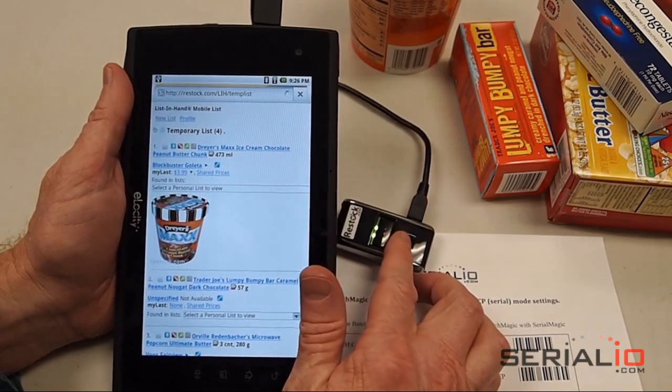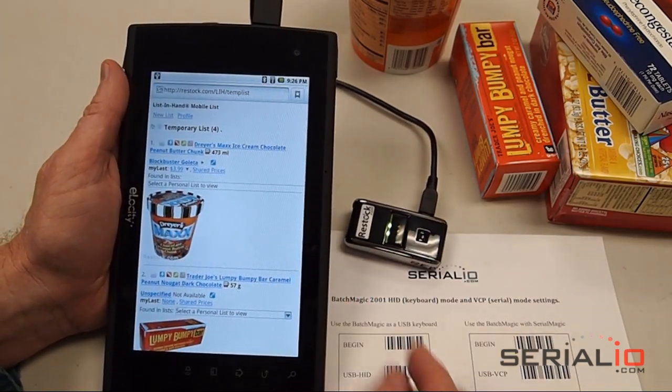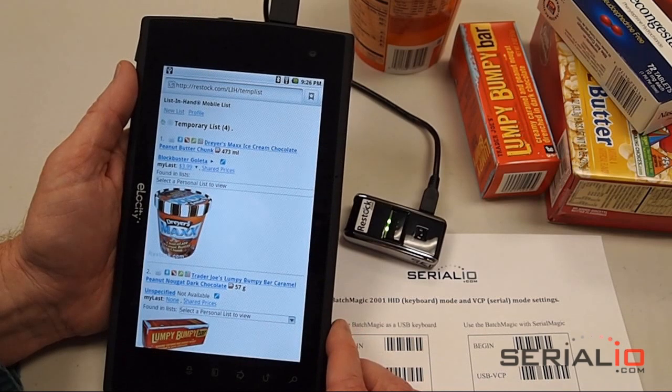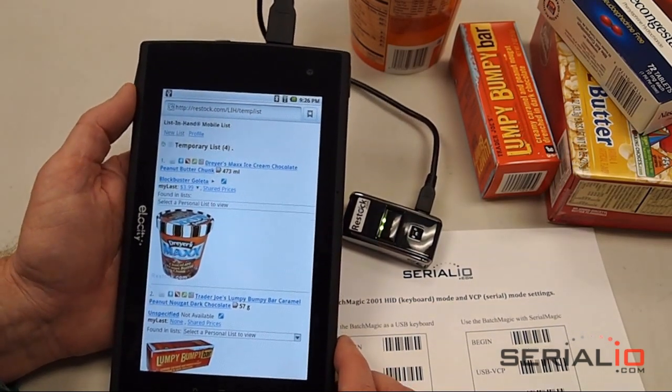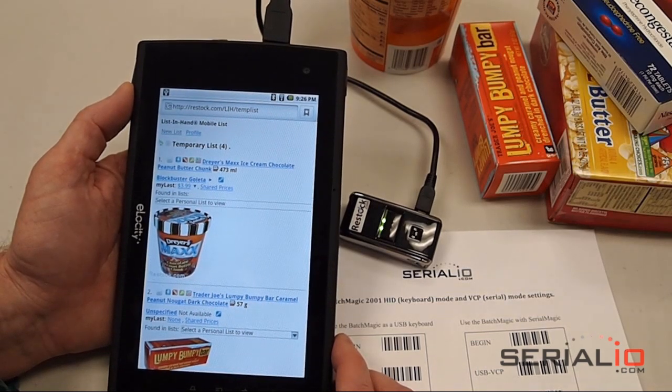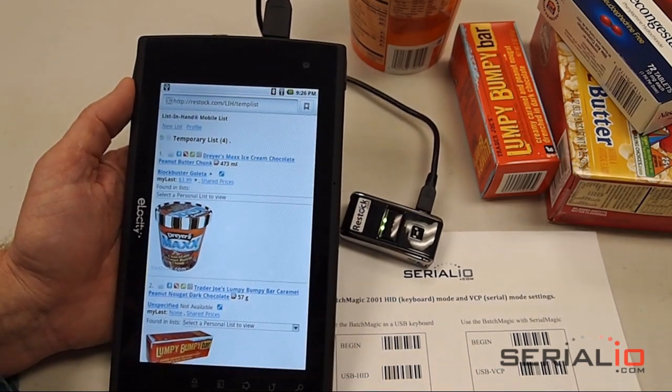You can do this with any application using the Batch Magic in USB keyboard mode. For more information on barcode and RFID scanning solutions for Android, iOS, and many other platforms, please visit SerialIO.com. Thank you for watching.